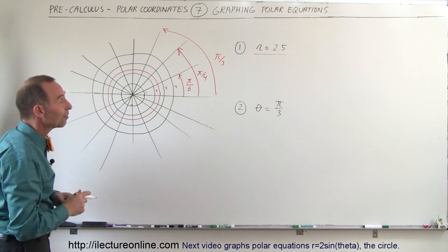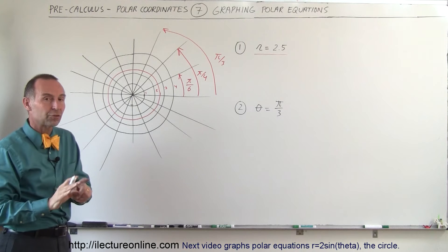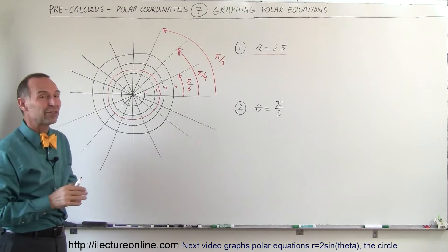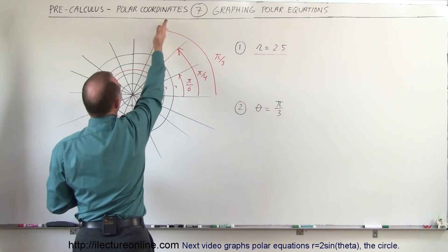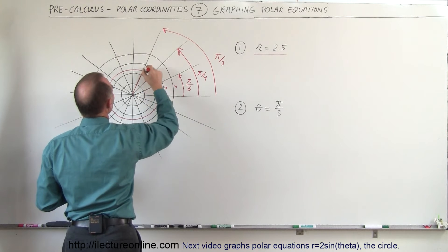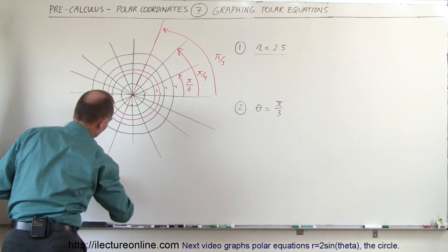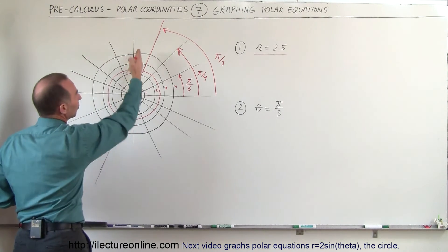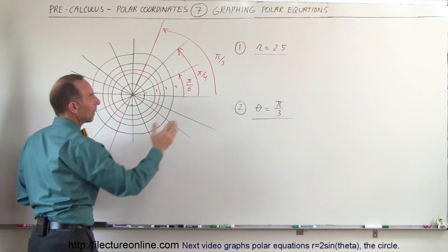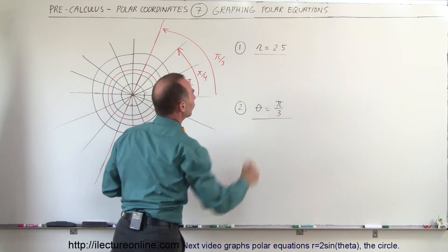Now the second equation we have is theta equals pi divided by 3. Notice we have no specification for the distance r but we are given a specification of the angle pi divided by 3 which is this angle right here. Since r is not specified, that means we can take on any value of r in both directions away from the origin. So this line here represents the equation theta equals pi divided by 3, and this right here is the equation r equals 2.5.